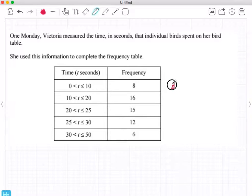If I take the frequency and divide it by the class width, which is 10, I get 0.8. And that is the frequency density, 0.8.